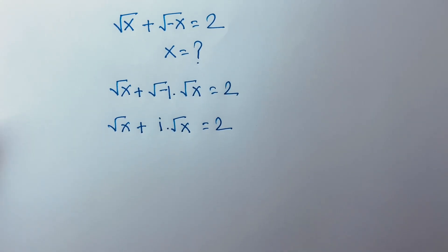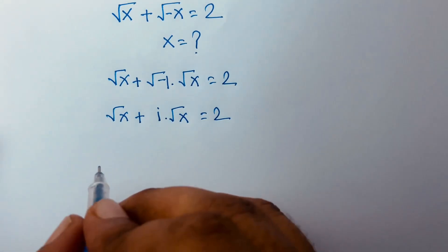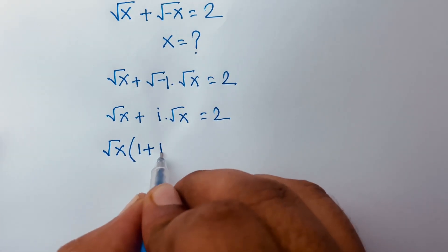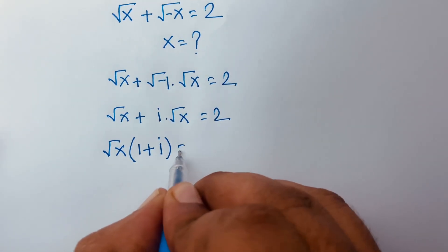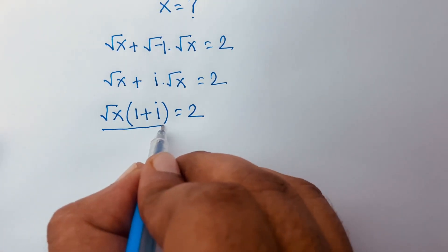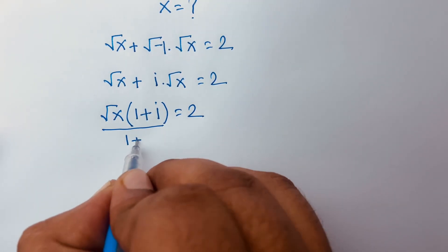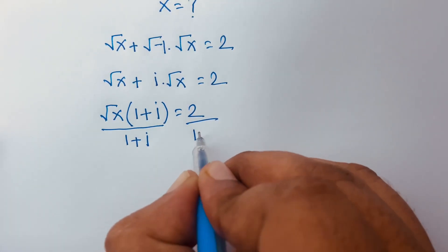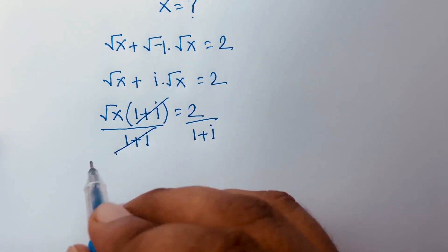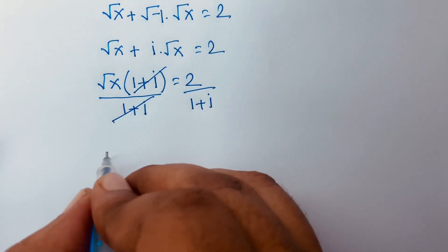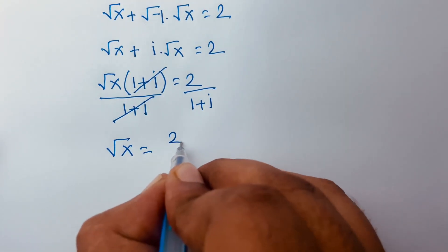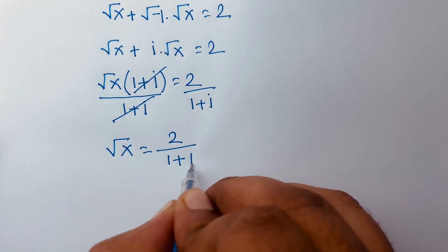Here, square root of x is common, so we can factor it out: square root of x times (1 plus i) is equal to 2. Dividing both sides by (1 plus i), we find square root of x is equal to 2 over (1 plus i).